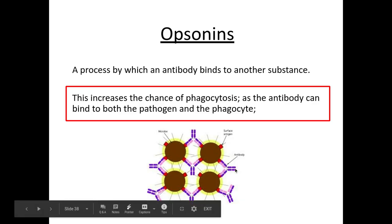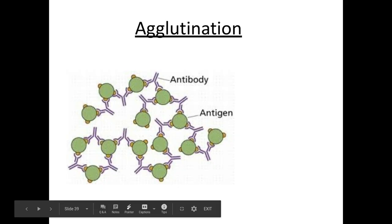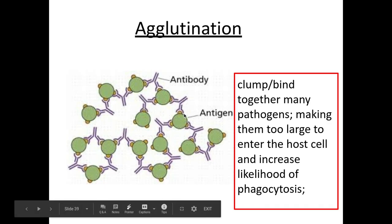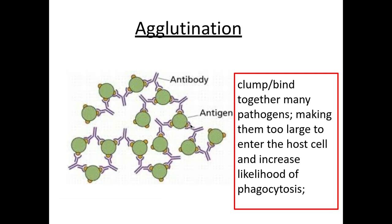Agglutination - as it sounds, like 'glue' - this is where antibodies clump or bind together many pathogens. This makes them too large to enter into any host cells. In order for pathogens to cause harm, they need to enter our cells, so if they're all stuck together in a big clump, they cannot get in. It also increases the chance of phagocytosis occurring, because the constant regions are available to bind to the phagocyte during phagocytosis.